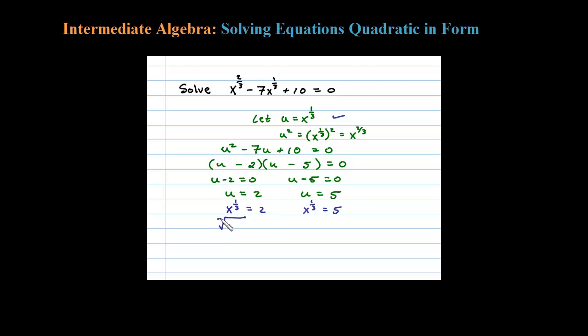This would be the cube root of x to the 1 power equals 2, and then over here we have the cube root of x equals 5. We have two radical equations.